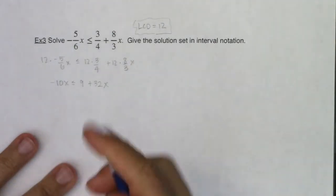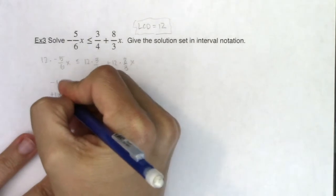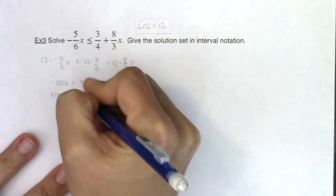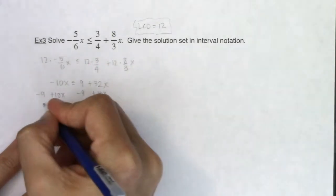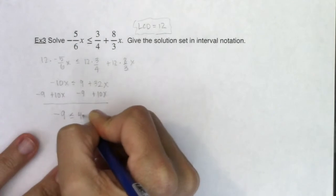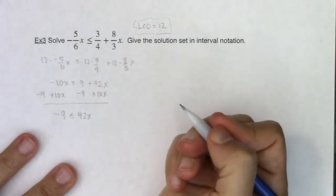But for me personally, I like positive coefficients. So I'm going to go rogue, and I'm going to add 10x to both sides and subtract 9. So when I go to simplify this, I'm looking at negative 9 is less than or equal to 42x.